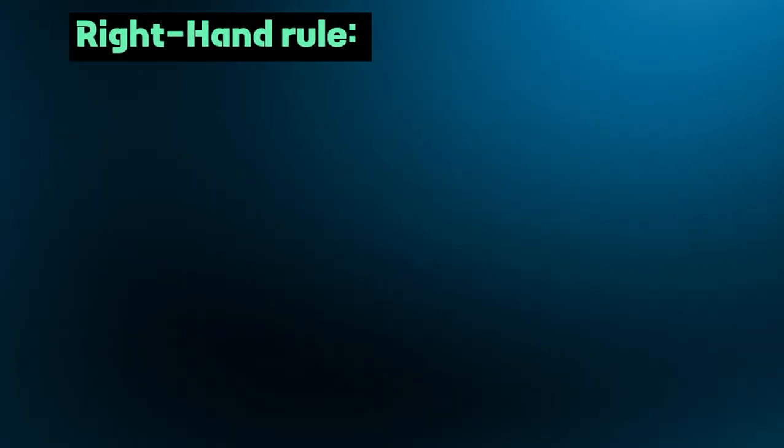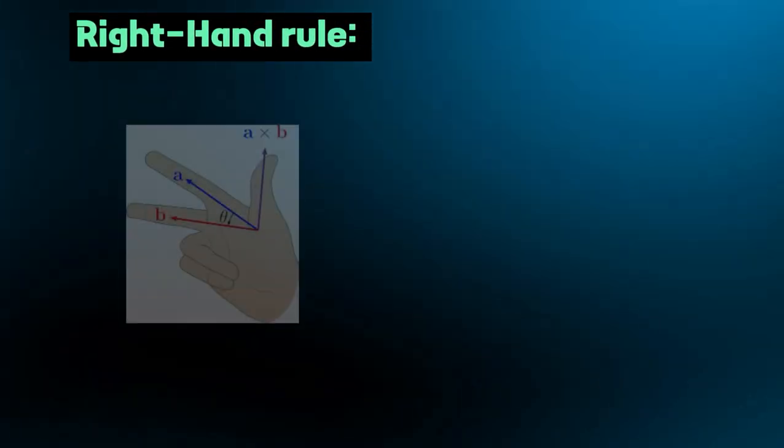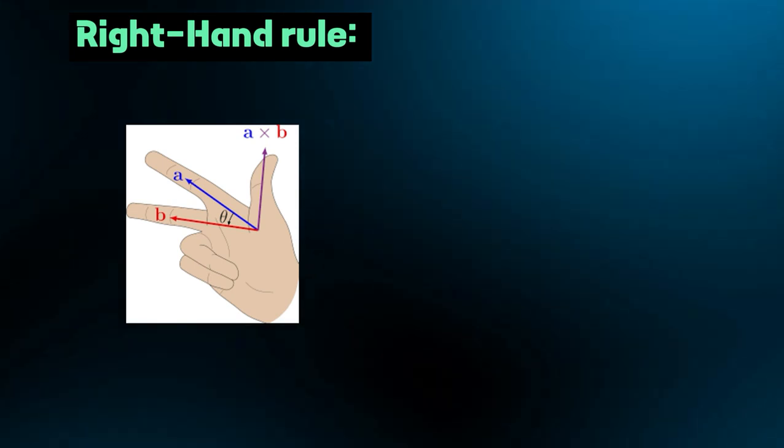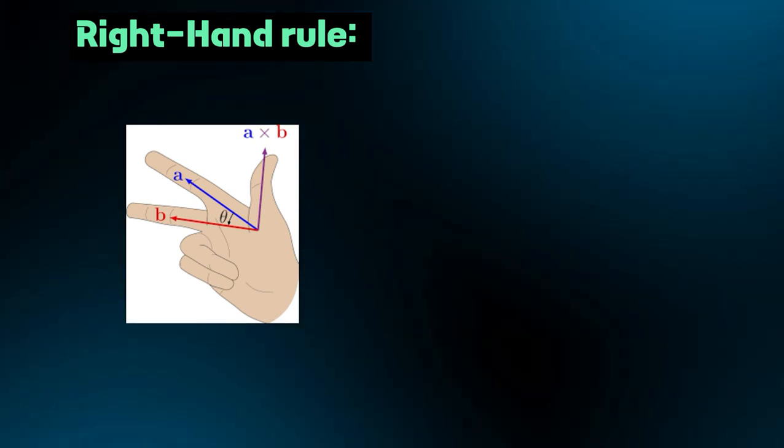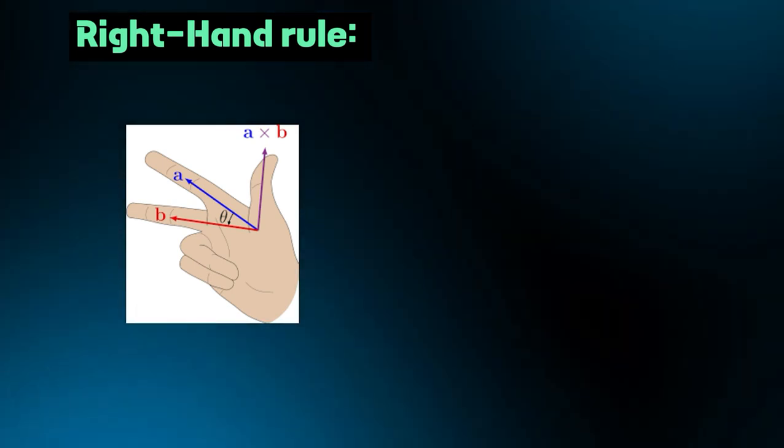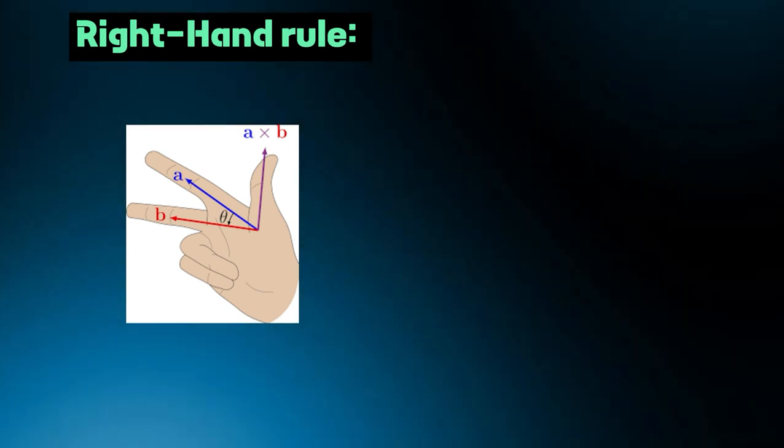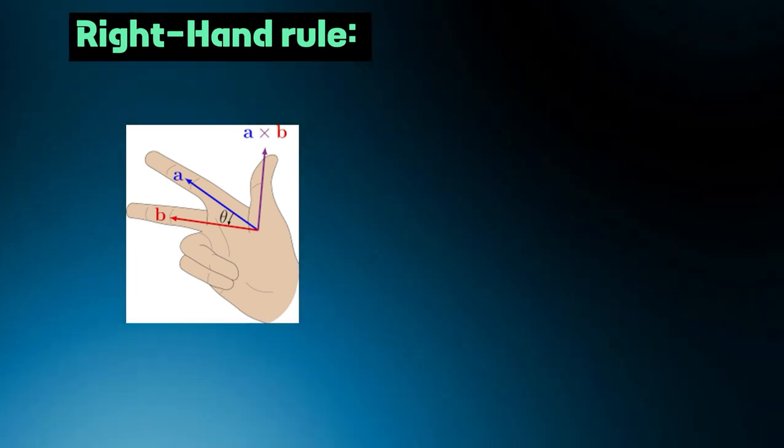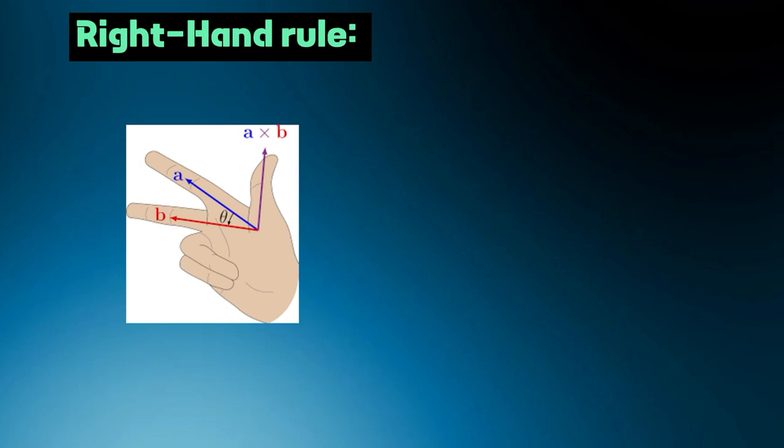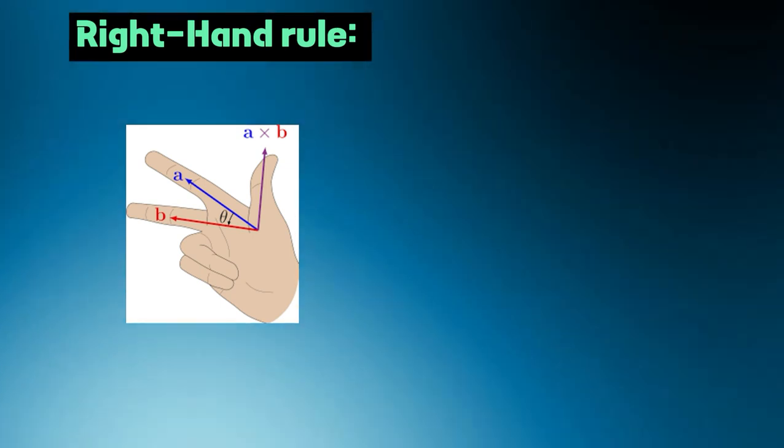Right-hand rule. In this rule, we can stretch our right hand so that the index finger of the right hand is in the direction of the first vector, and the middle finger is in the direction of the second vector. Then the thumb of the right hand indicates the direction or unit vector n.